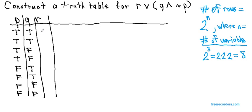And the third column is going to alternate. T, F, T, F, T, F, and T, F.